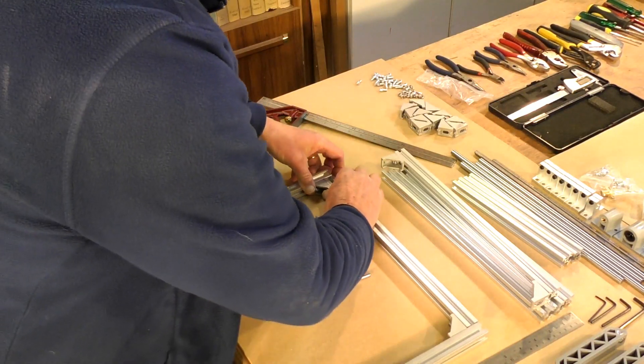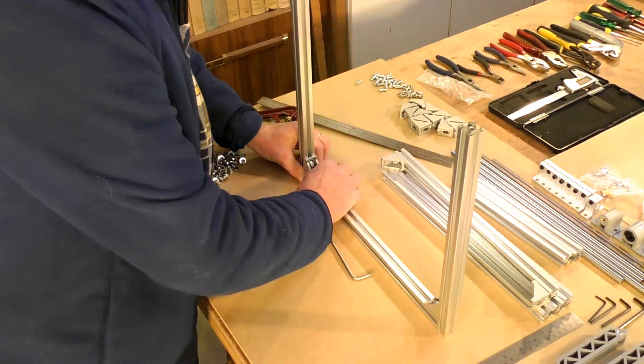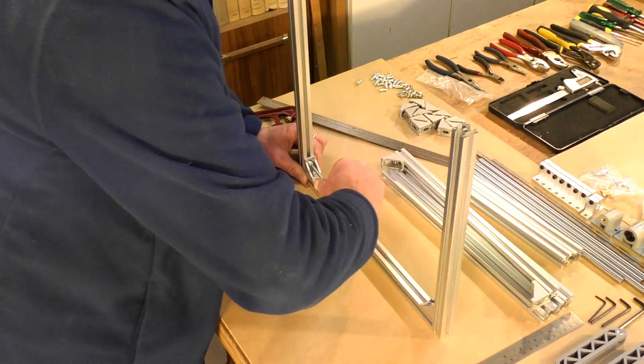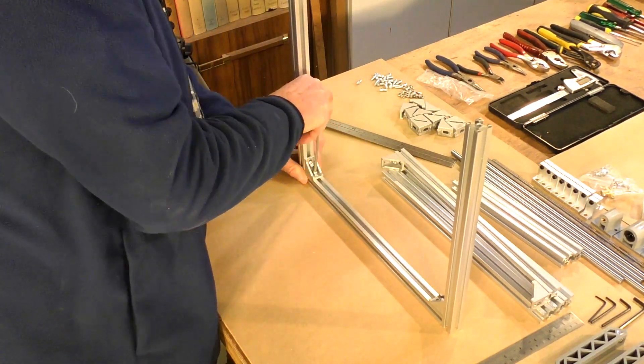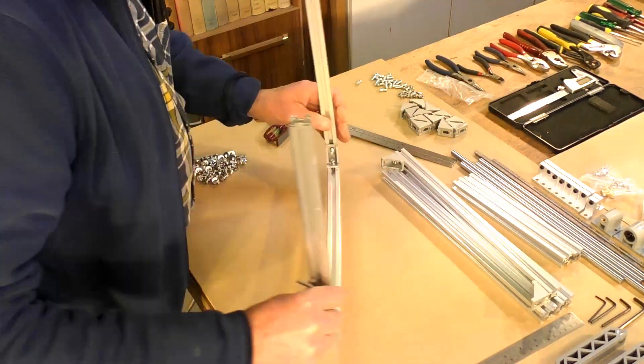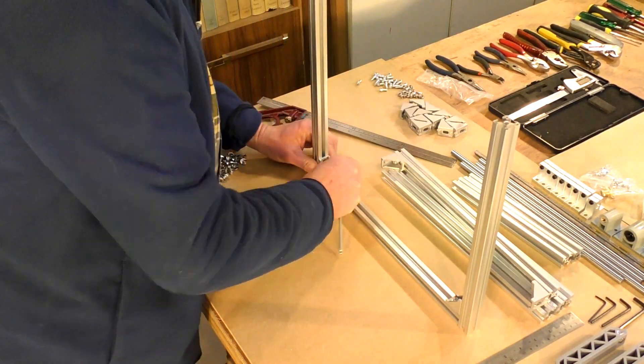They're just a little bit small I think for my fingers but if you persevere they're actually fine. It's important at this stage because this is the main chassis to get everything exactly square as you can, because that's going to determine the outcome of the whole build.